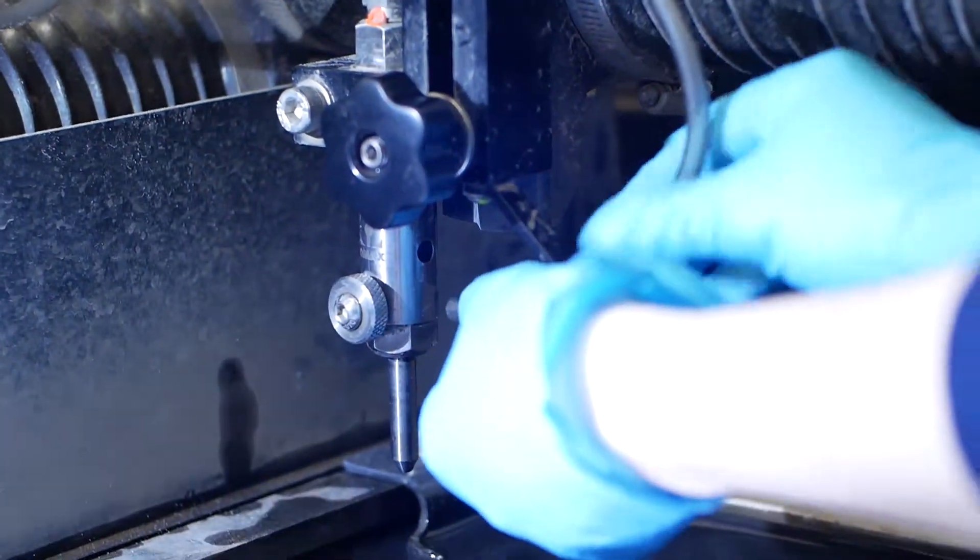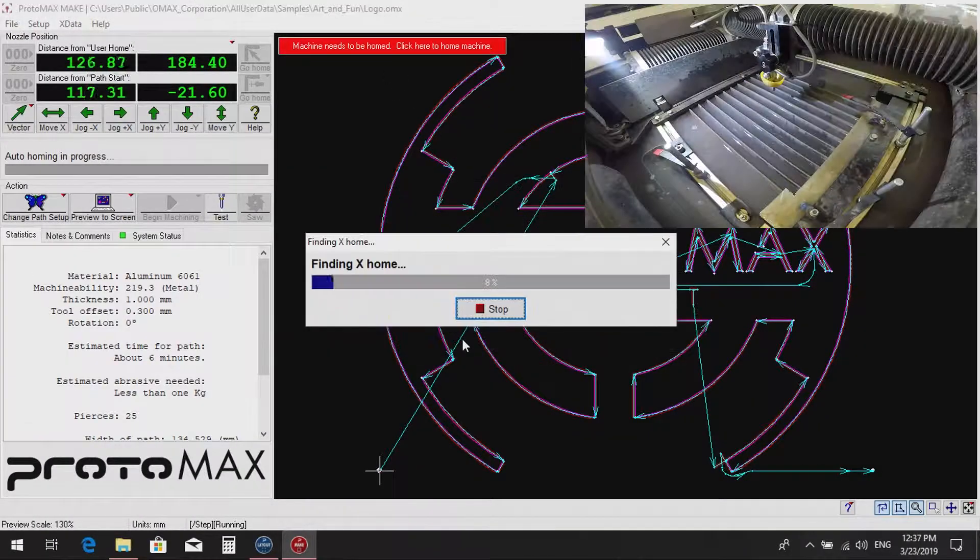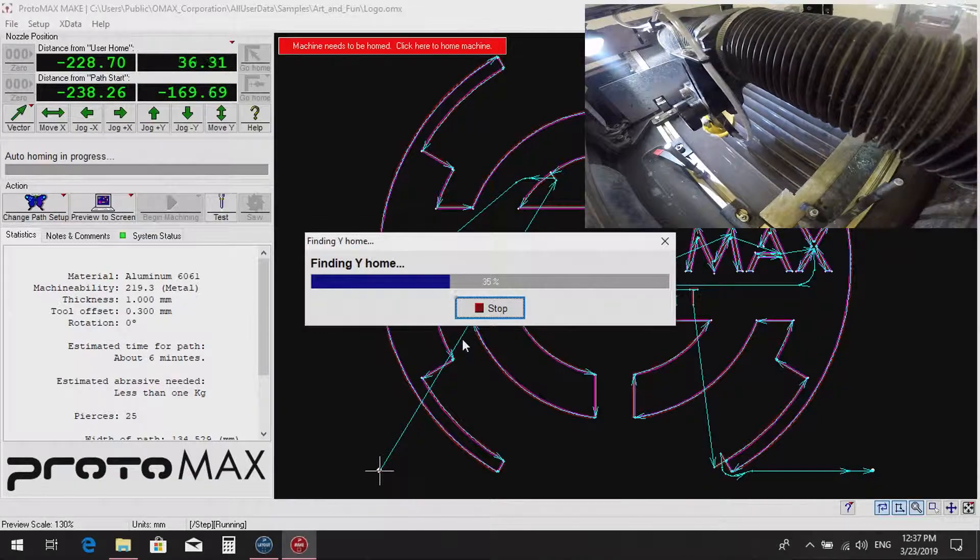Disconnect the garnet feed, making sure that it doesn't drop into the water. Now the axis of the machine can be homed by clicking the red home button.